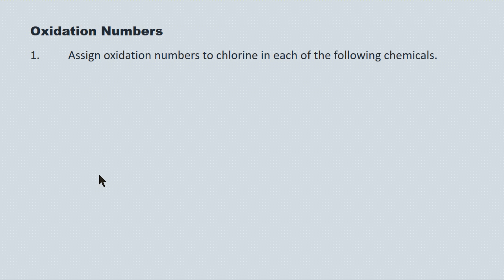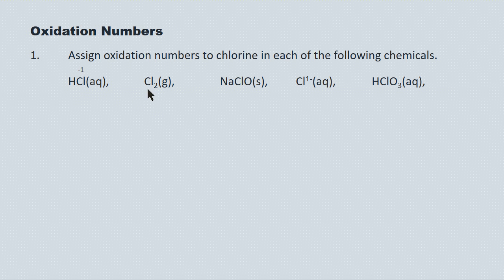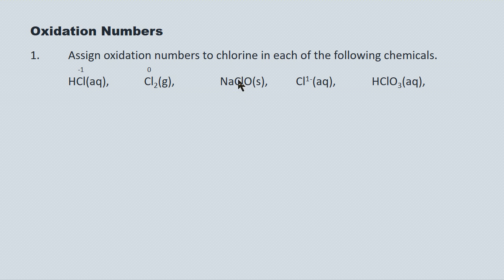Here's our first question: assign oxidation numbers to chlorine in each of the following. For HCl, I know the hydrogen rule is plus one, so the chlorine here must be minus one. For Cl2, this is neutral chlorine in a diatomic molecule, so it's going to be zero. For NaClO, the sodium monatomic ion is plus one and oxygen is minus two, so the chlorine must be plus one because the oxidation states have to add up to zero.